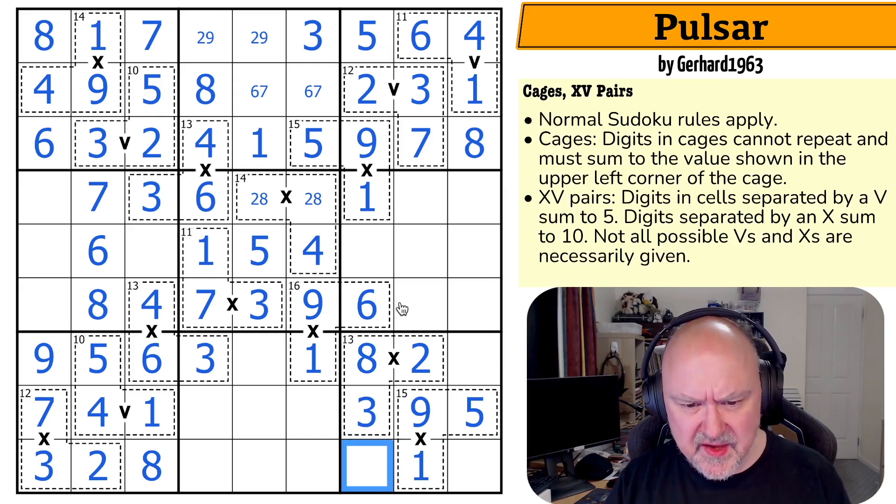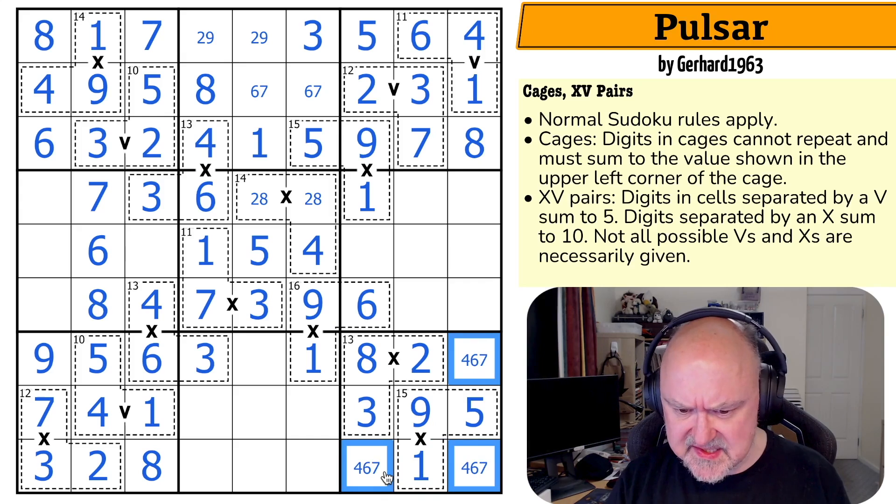And have I done all the cages yet? Not quite, but I'm getting close. I feel this is a triple. I always like marking triples: four, six, seven, and there's a four already in that column. So this becomes the four.